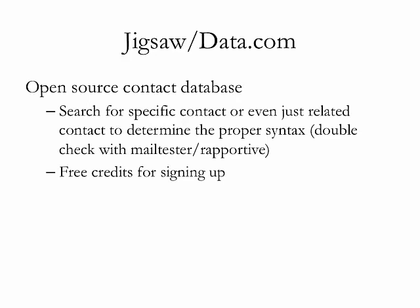Another place you can go is jigsaw.com or data.com — they're both the same thing and were purchased by Salesforce not too long ago. Essentially, Jigsaw is an open-source contact database where anybody can contribute the name and contact information of particular people at companies, and in exchange they can get contact information for people they're looking for. You get a few free credits for signing up, and when you do get email addresses from this service, I always like to double-check them with MailTester or Rapportive, because the data is self-reported and can be inaccurate at times.